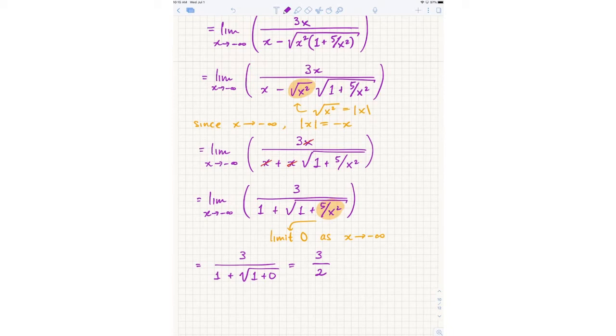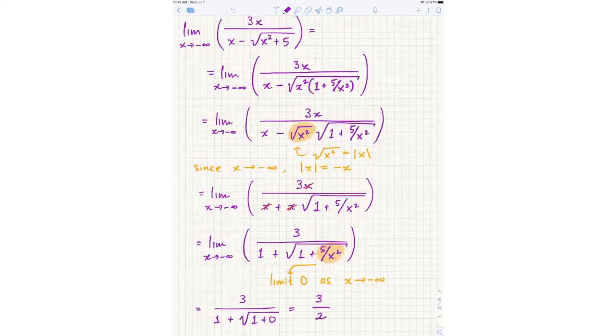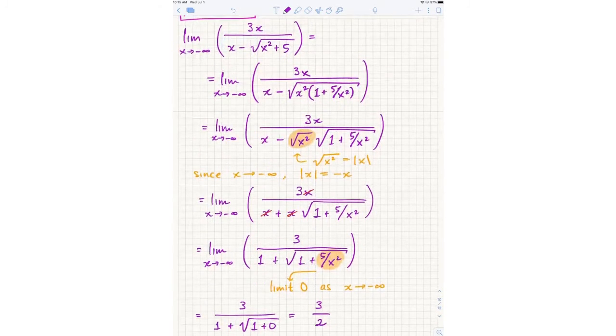So one of the two horizontal asymptotes is three halves. Any questions about that? All right, this is a challenging problem.